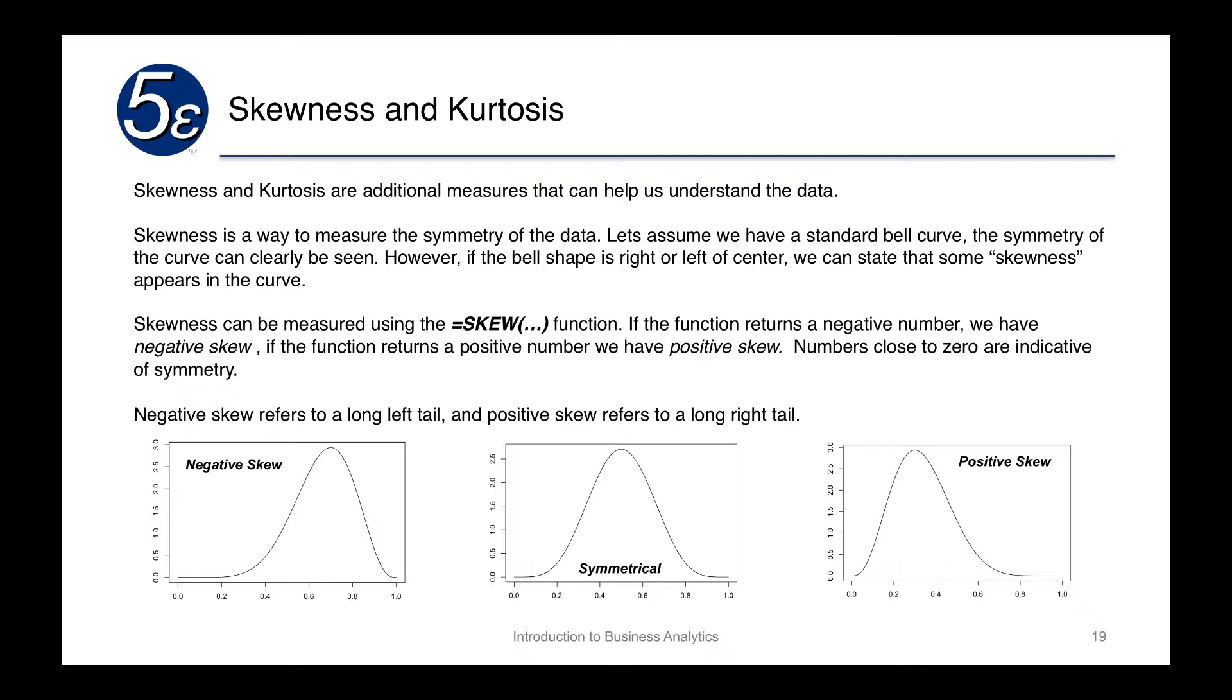If the function returns a negative number, we have a negative skew. And if the function returns a positive number, we have a positive skew. Numbers close to zero are indicative of symmetry.